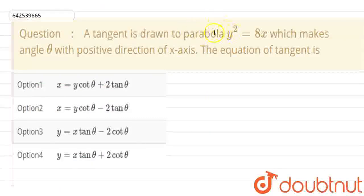Hello students, in this question we have given a parabola equation which is y square equal to 8x. In the question it said that a tangent is drawn to the parabola which makes angle theta with positive direction of x-axis and we need to find the equation of tangent.